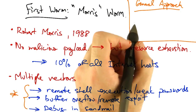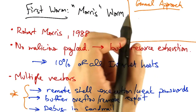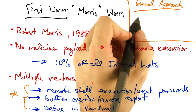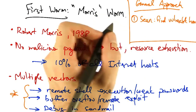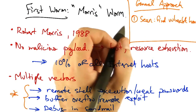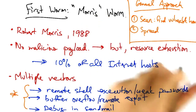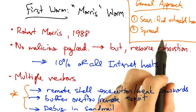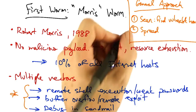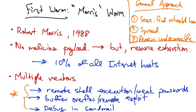This worm design also followed a general approach that we see showing up over and over again in worm designs. First, the worm needs to scan other hosts to find potentially vulnerable hosts. Second, it needs to spread by infecting other vulnerable hosts. Third, it needs to remain undiscoverable and undiscovered so that it can continue to operate and spread without being removed from systems.